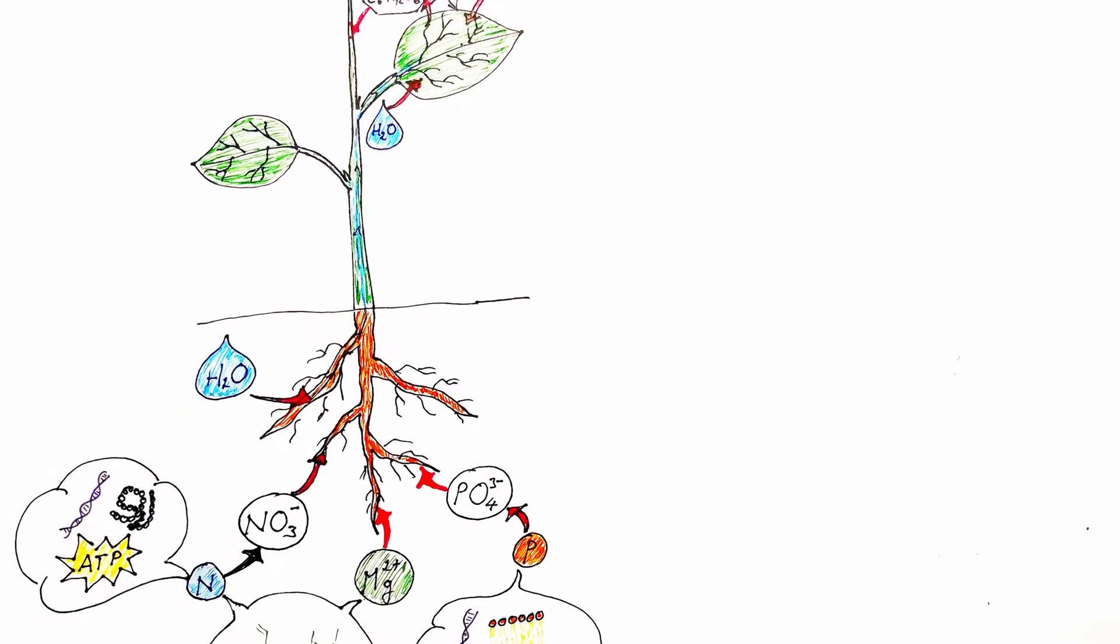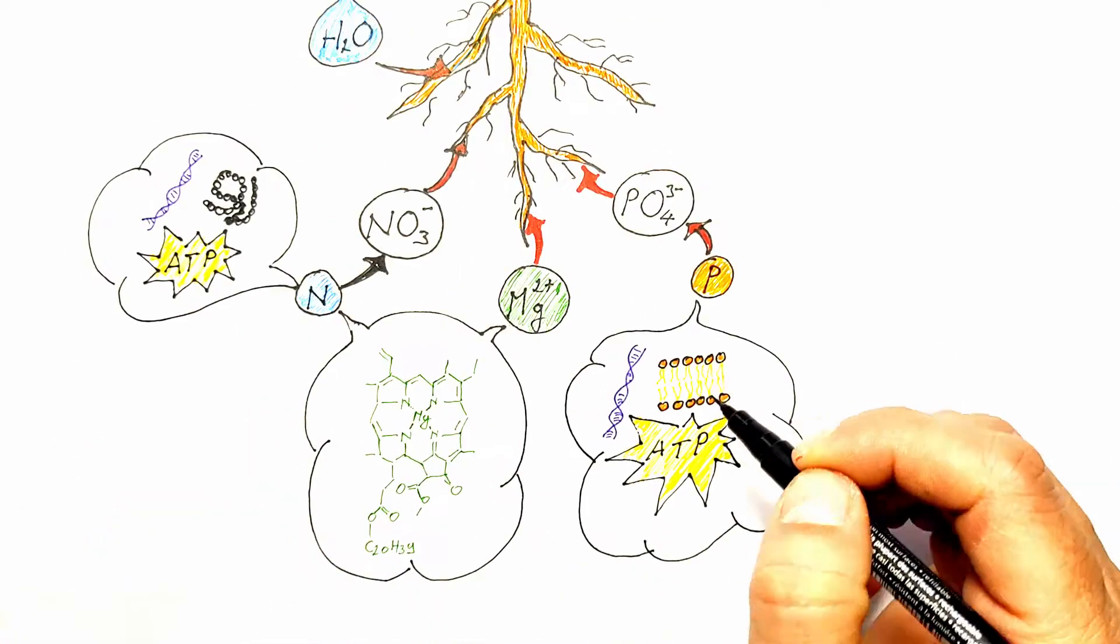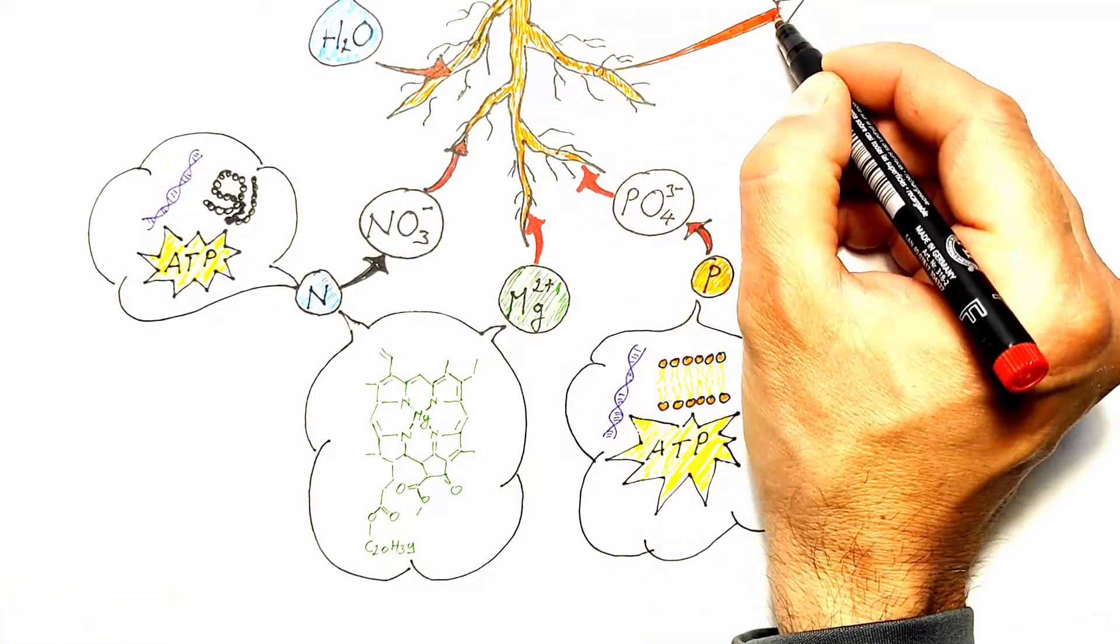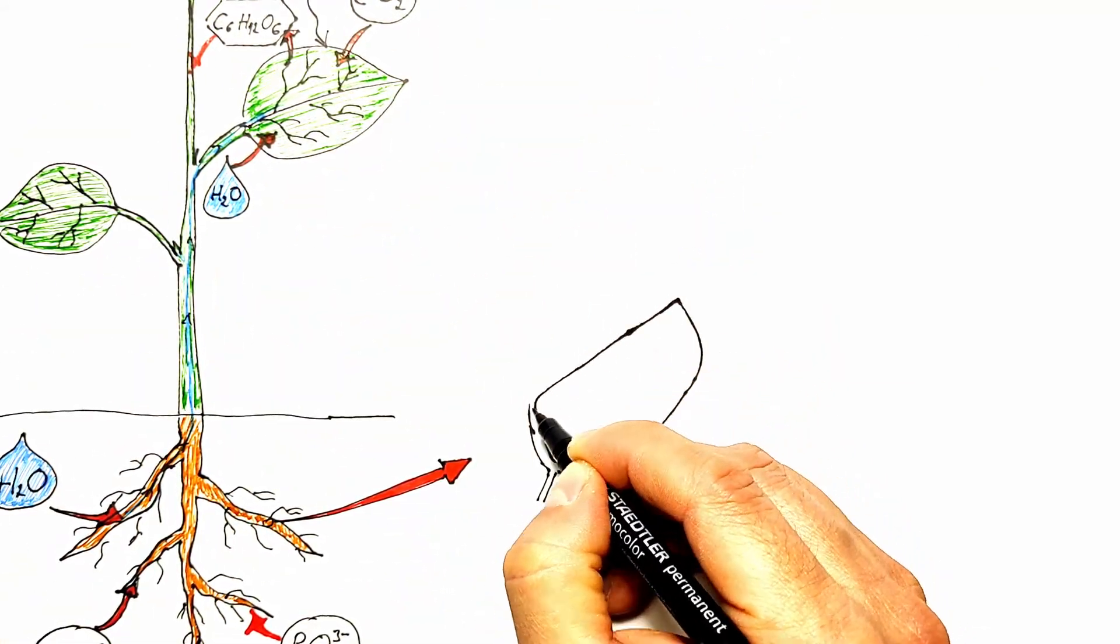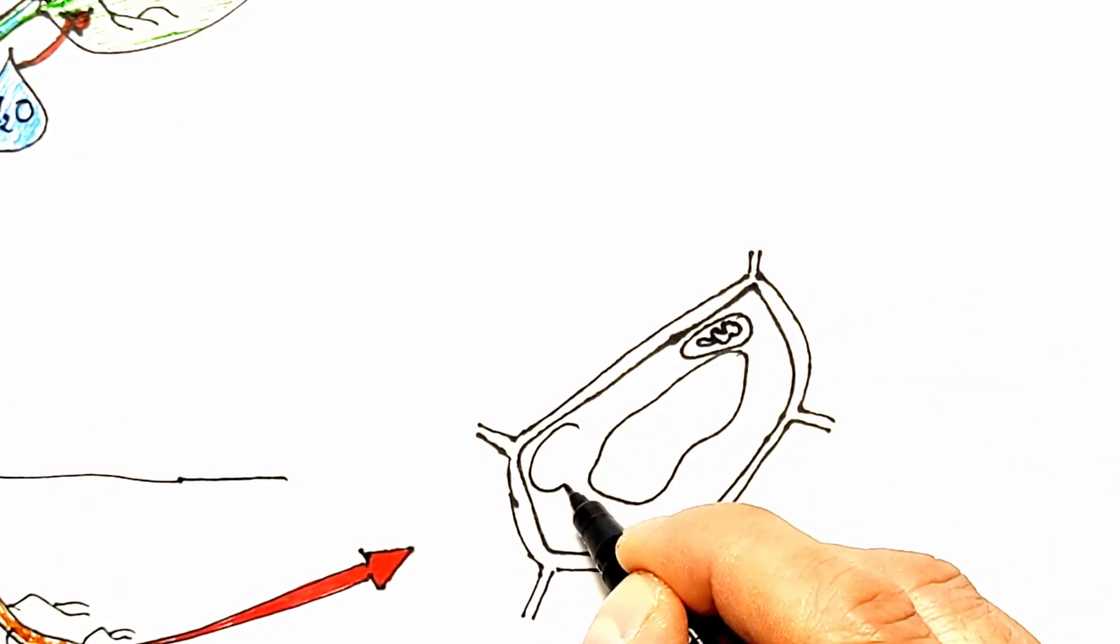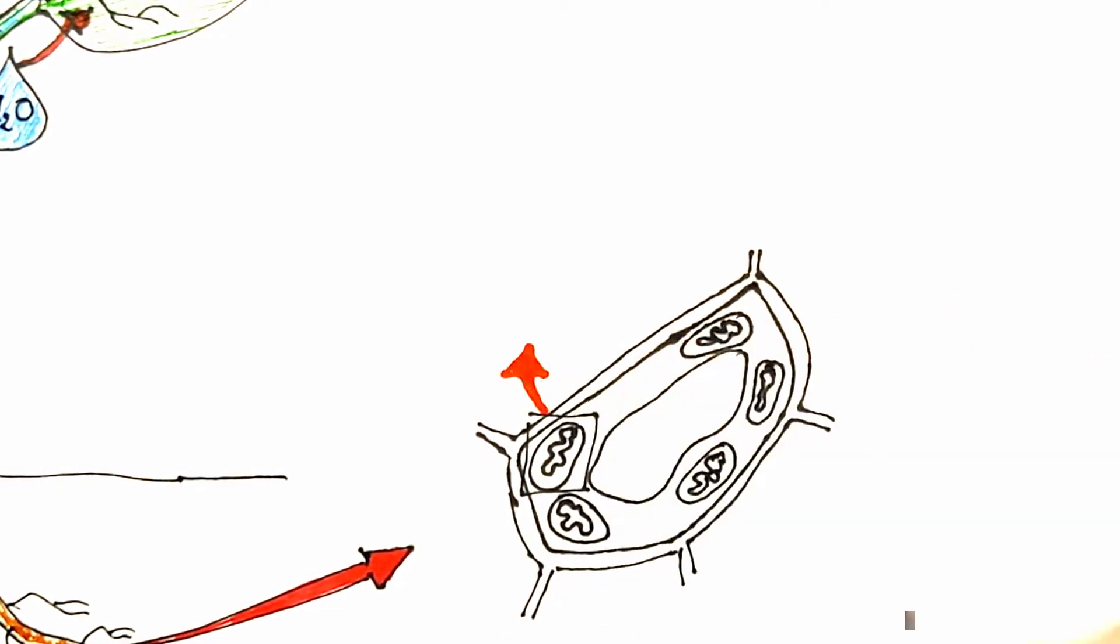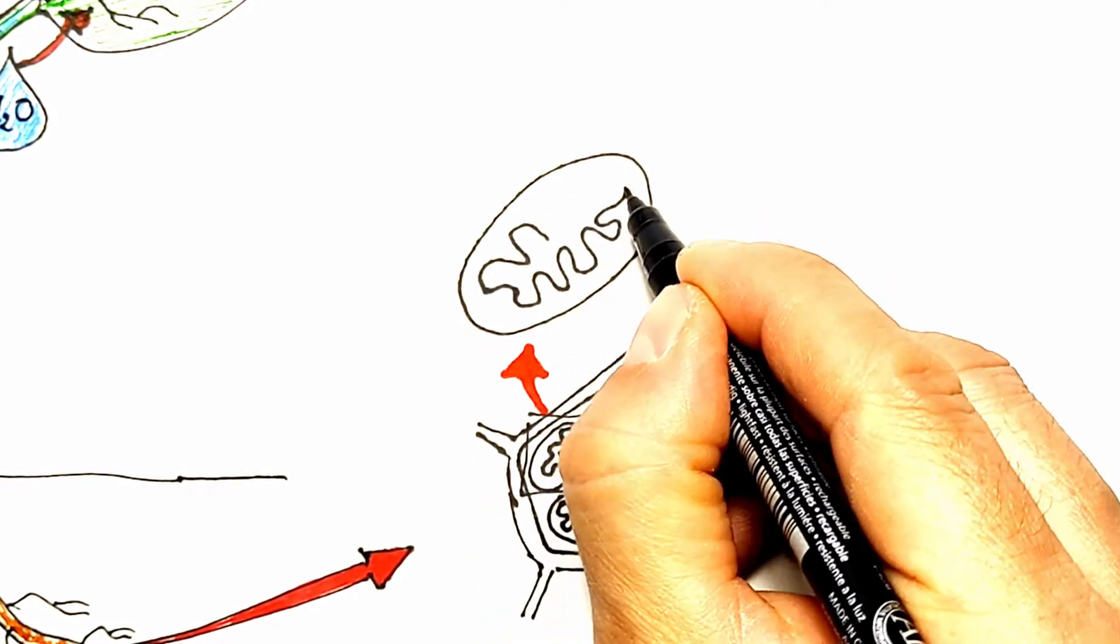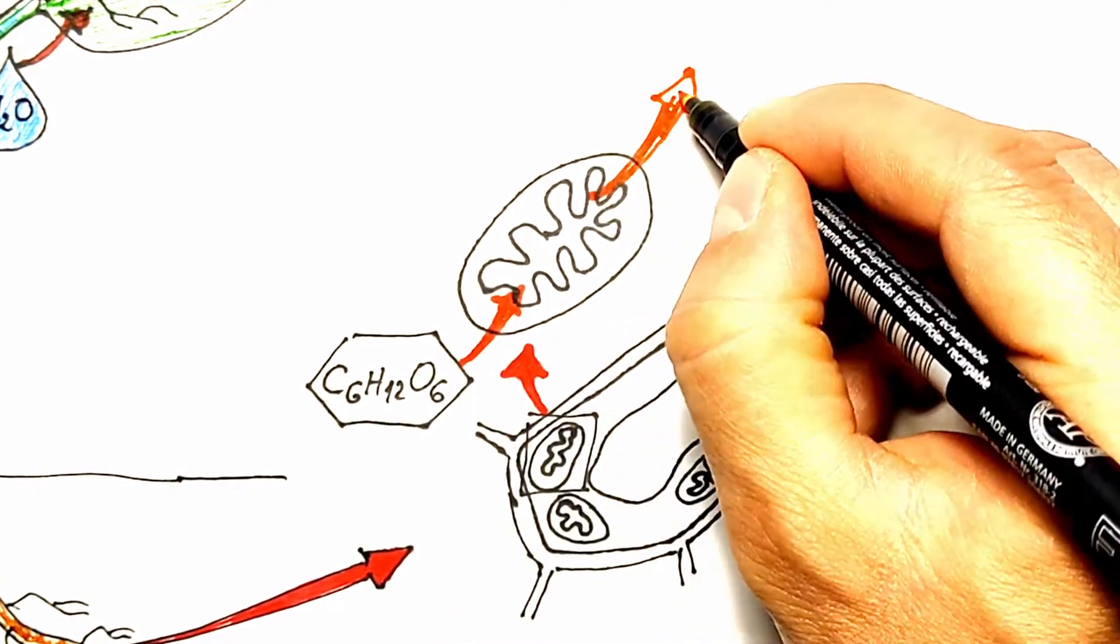Plants would not be able to absorb these minerals without consuming energy, which they obtain from a high energy compound known as adenosine triphosphate, or ATP. This compound is formed during the process of cellular respiration in the mitochondria, during which organic matter is broken down with the help of oxygen. This means that without oxygen, the absorption of minerals from the soil is not possible.